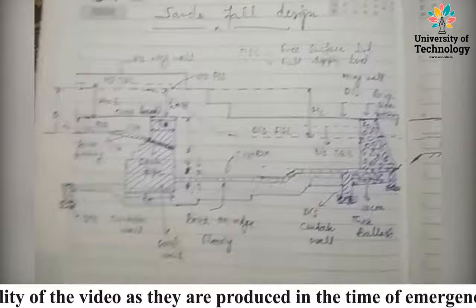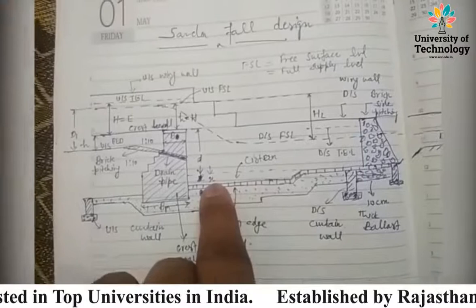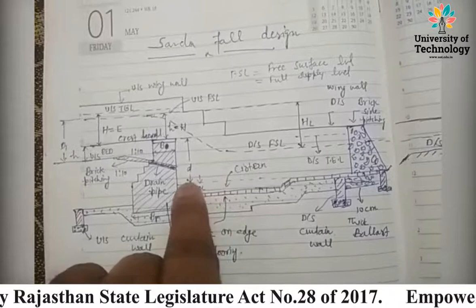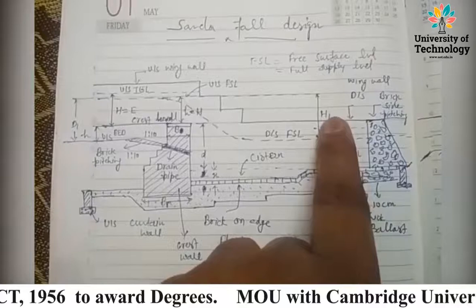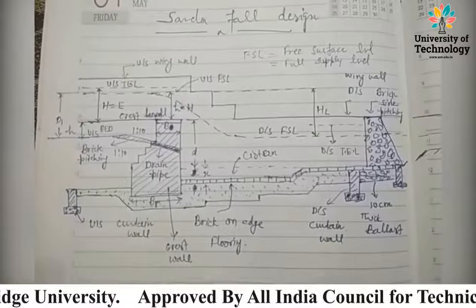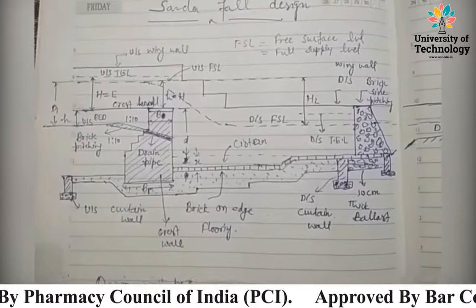This is the diagram regarding the Sarda fall design. You should keep in mind what the system is, where it is present, what is small d, what is the total energy line, and what is the drop. All those terms should be very clear, then this question will be very easy. In the next lecture we will design this Sarda fall step by step. Thank you.